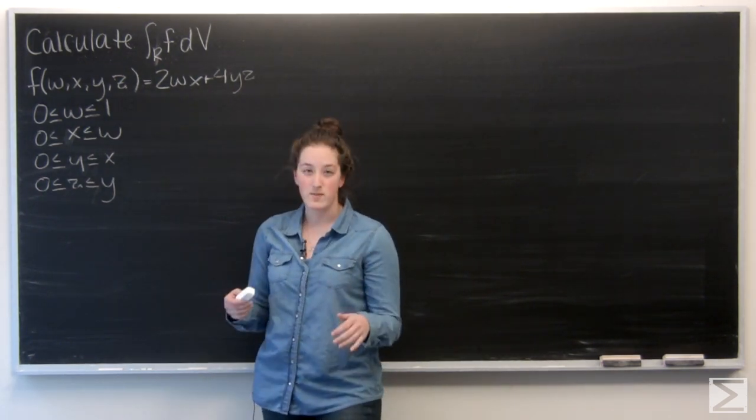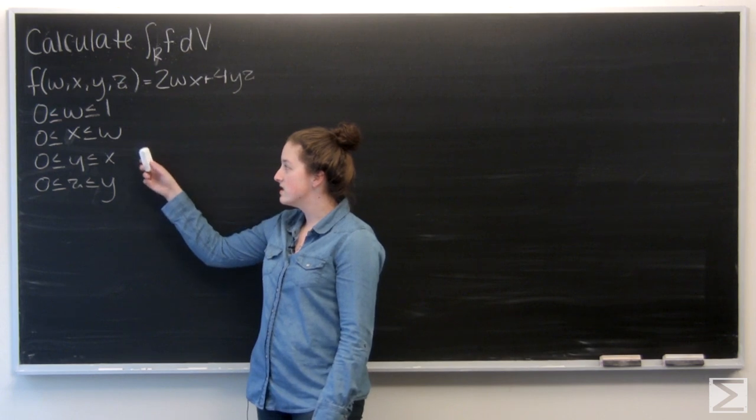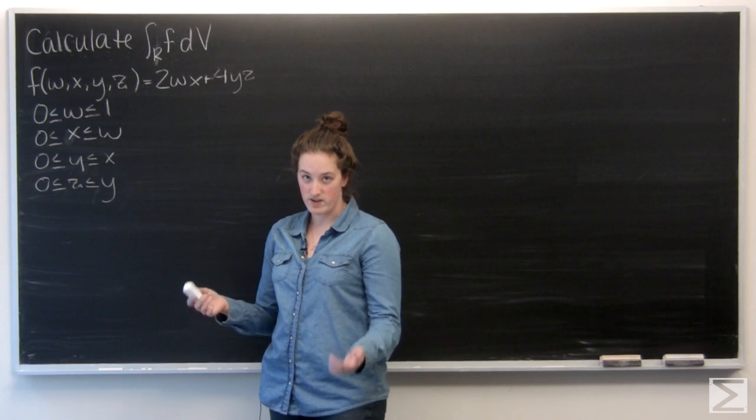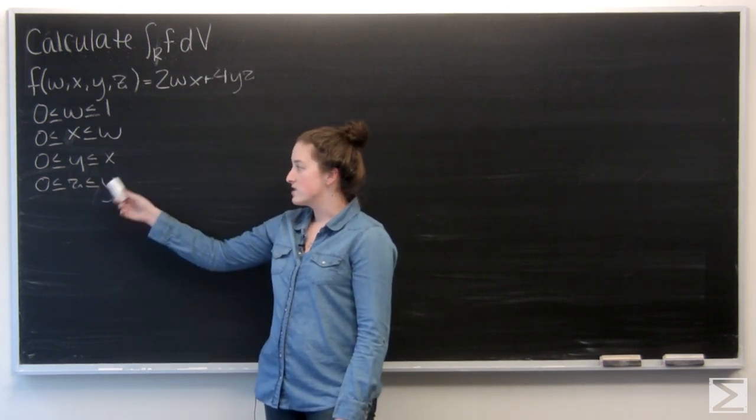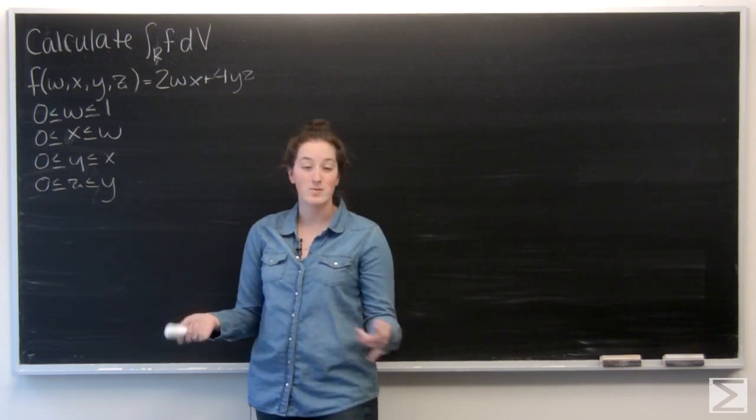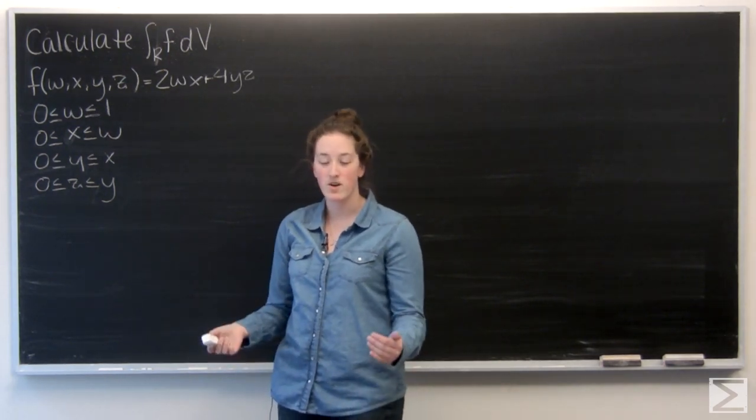And we're not given any specific bounds, but we are given these expressions for w, x, y, and z. And they're pretty much already set up for us for the order of integration. z has a function of y, y has a function of x, x has a function of w, and then w is just constant. So I'm going to go ahead and work through it that way.